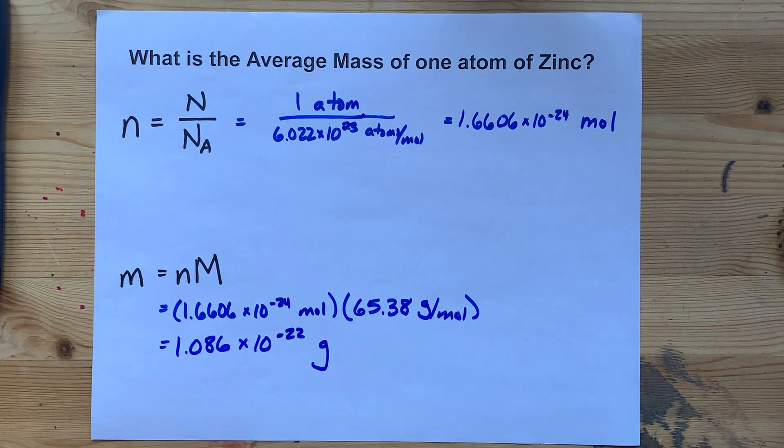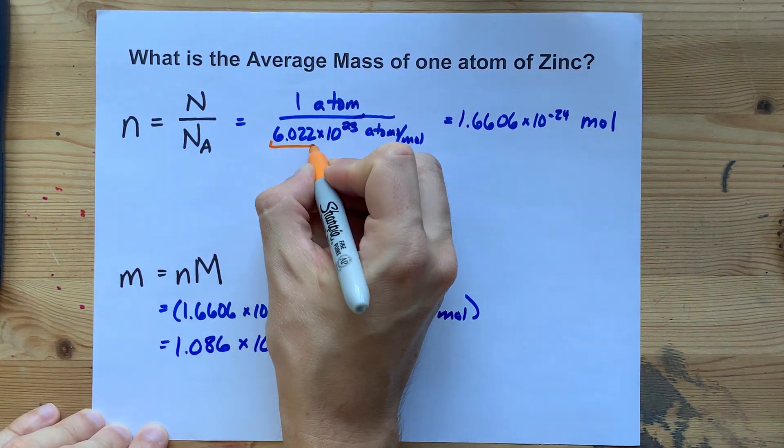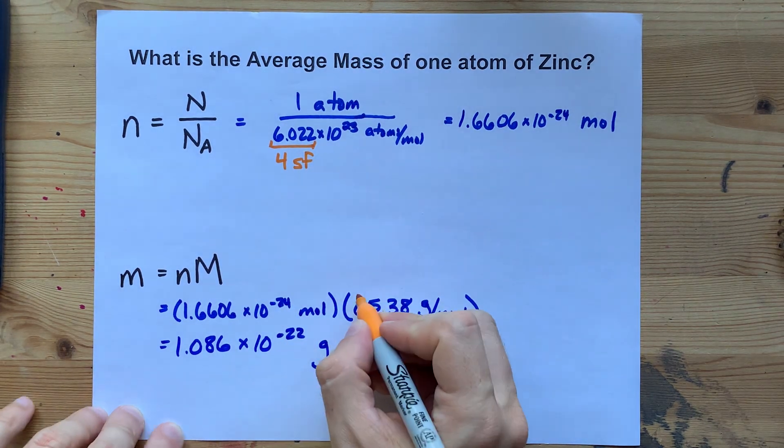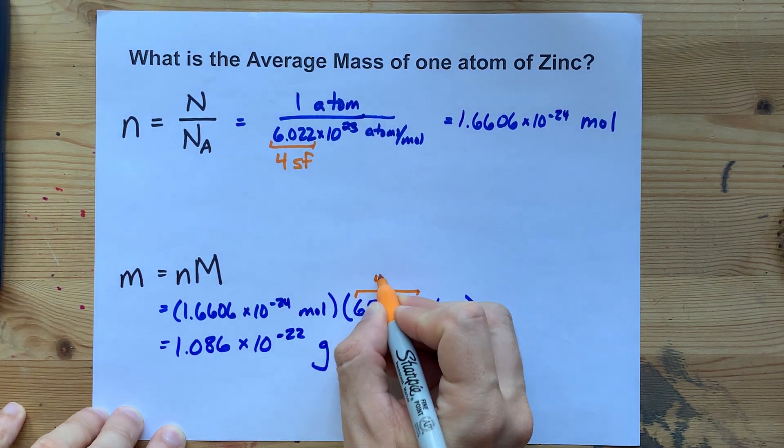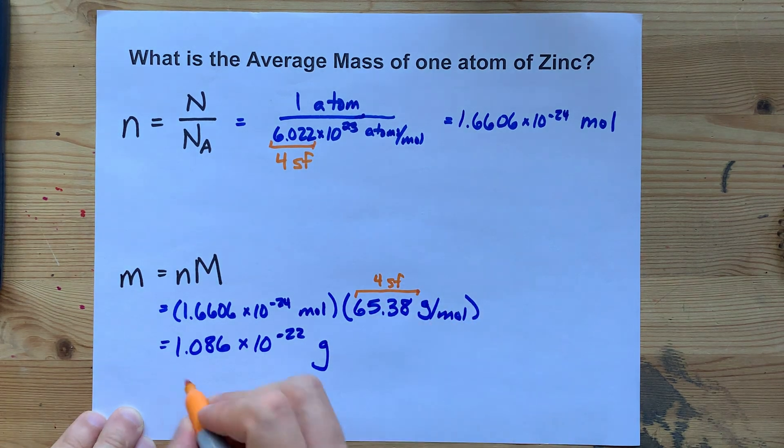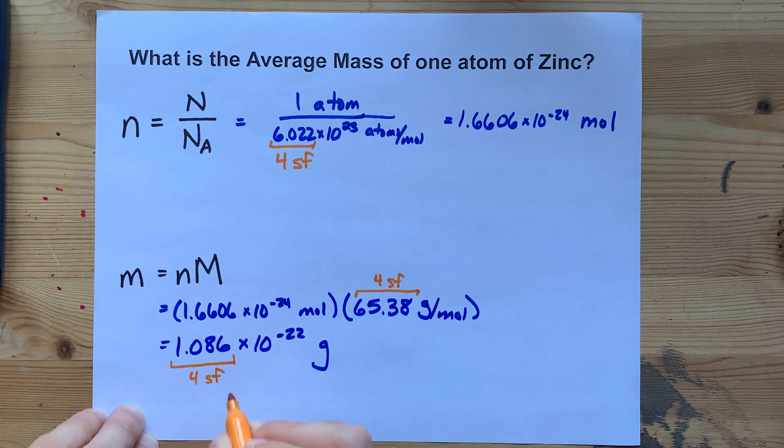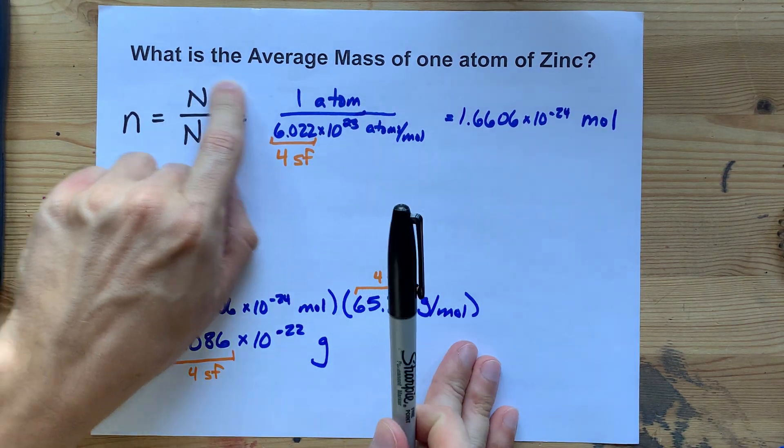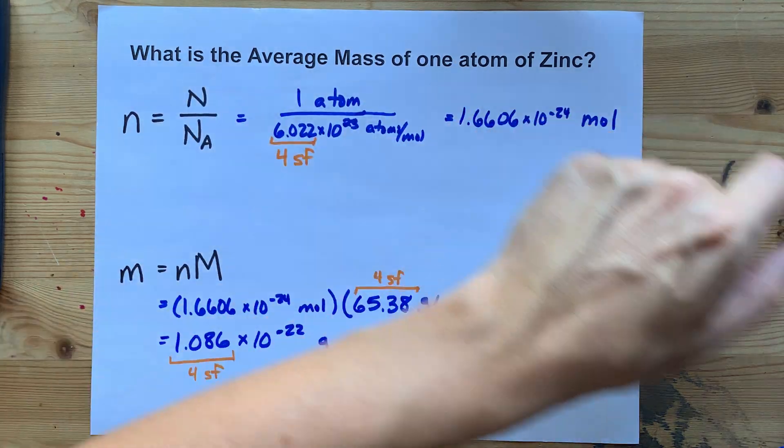I want to point out that the number we used here for Avogadro's number had four significant figures. The molar mass of zinc here also had four significant figures, which is why I gave my answer here as four significant figures.